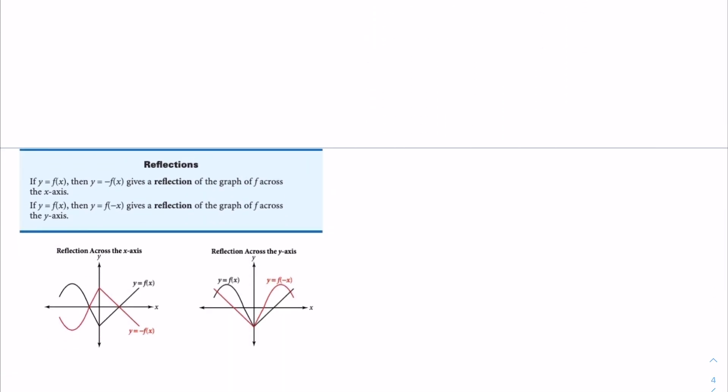The next transformation is reflections. If y is equal to f of x, then y is equal to negative f of x, which gives a reflection of the graph of f across the x-axis. If y is equal to f of x, then y is equal to f of negative x, which gives a reflection of the graph of f across the y-axis.